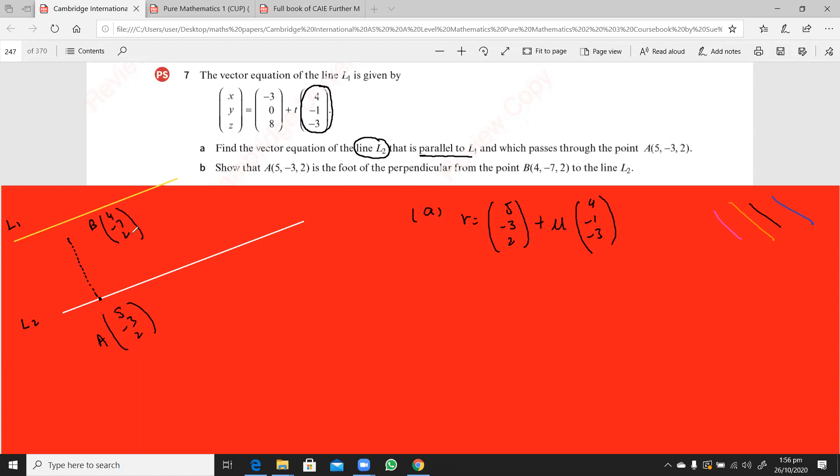So in the previous questions, we were finding this point B, now we're given, we have to show that this is the foot of the perpendicular from this point B to this line L2. So remember all those steps.